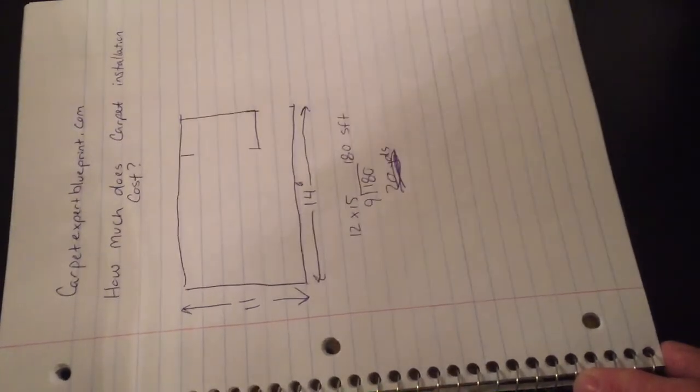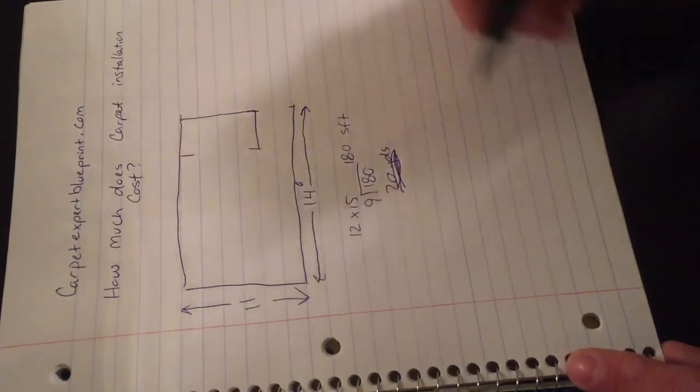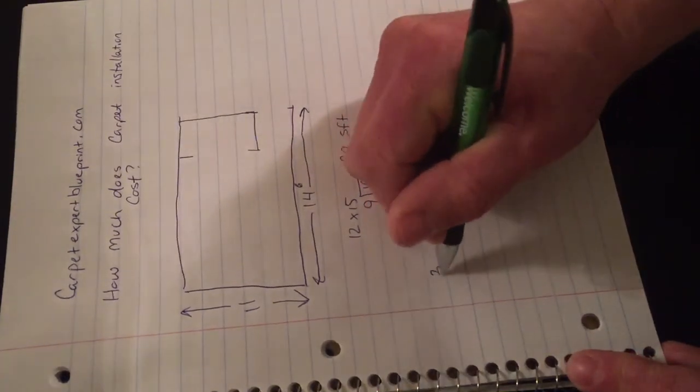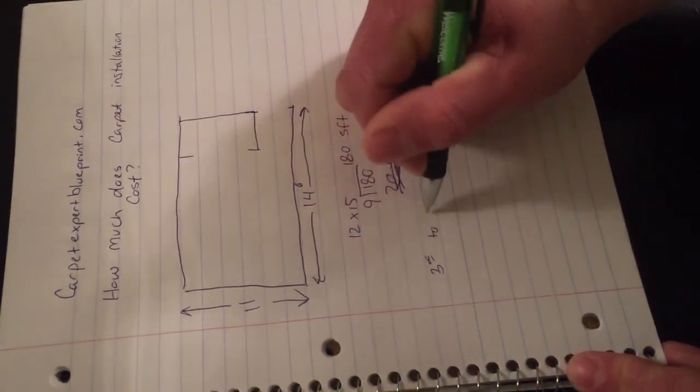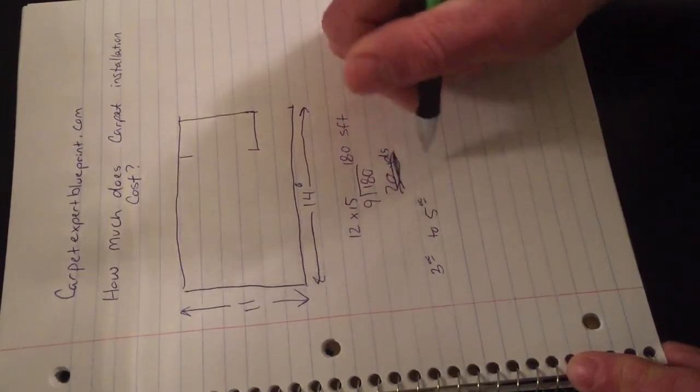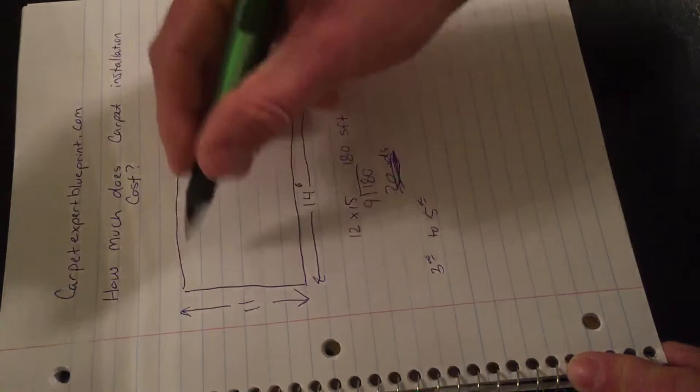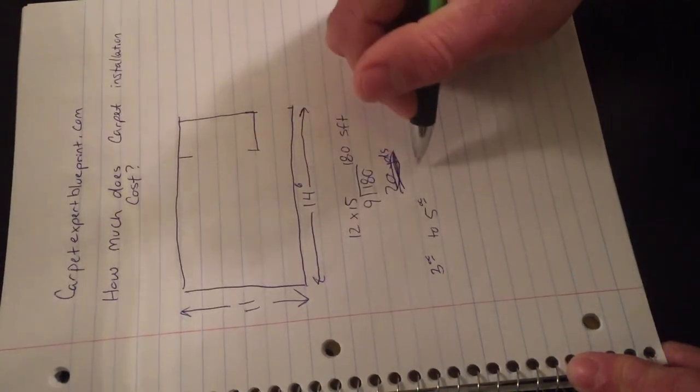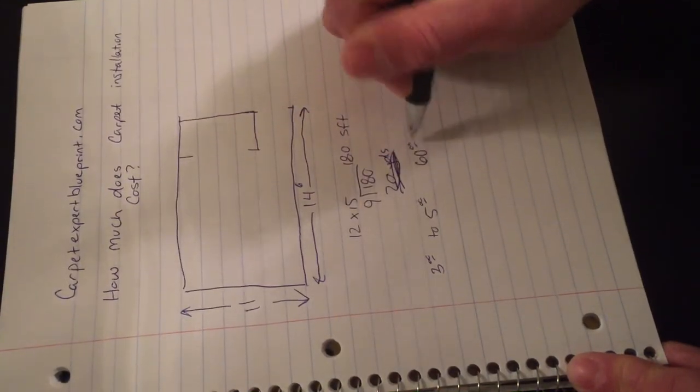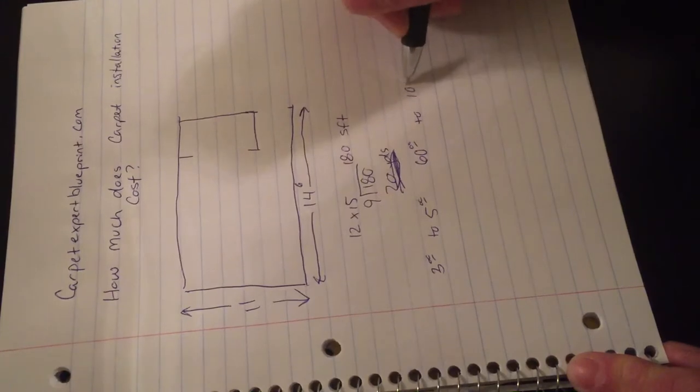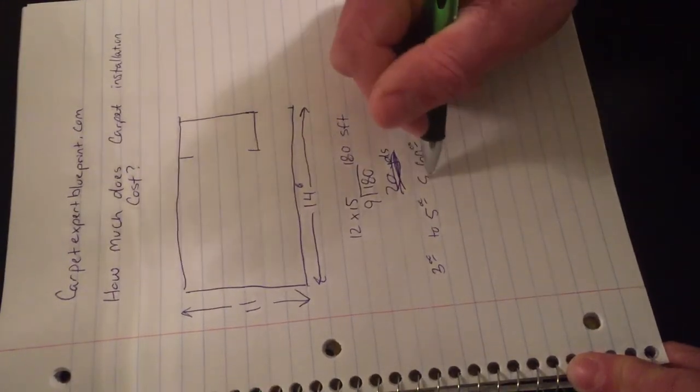So we are in need of an installer that could put in 20 square yards for us. Carpet installation runs $3 to $5 per square yard typically, so this particular room, if it's empty and ready to go, is going to be anywhere from $60 to $100 to have the installer show up and knock that out for you.